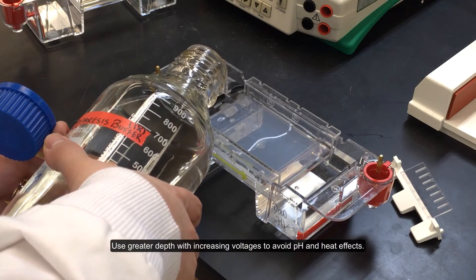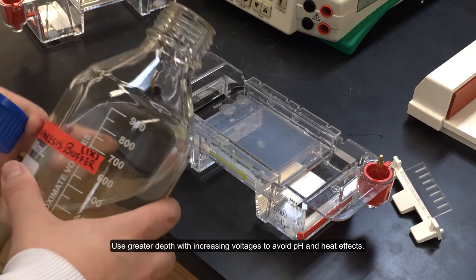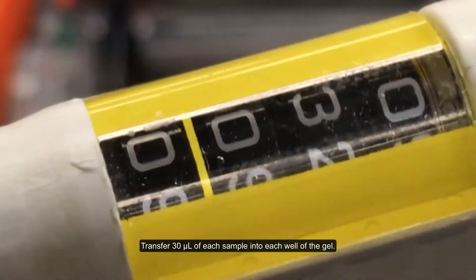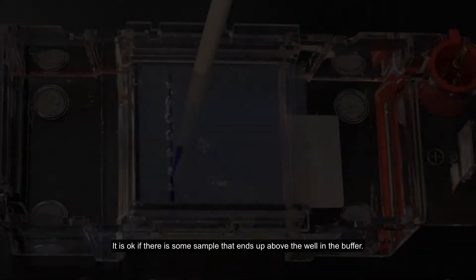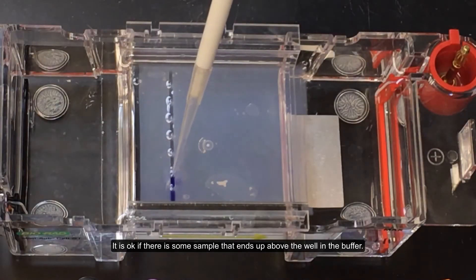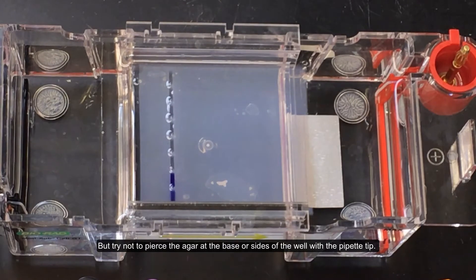Use greater depth with increasing voltages to avoid pH and heat effects. Transfer 30 microliters of each sample into each well of the gel. It is okay if there is some sample that ends up above the well in the buffer, but try not to pierce the agar at the base or sides of the well with a pipette tip.